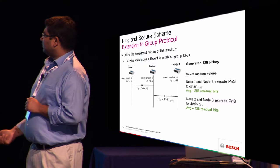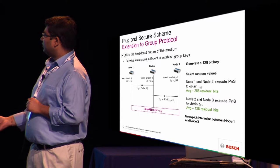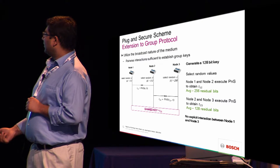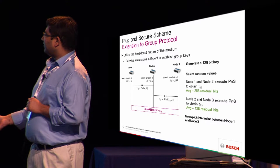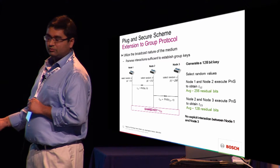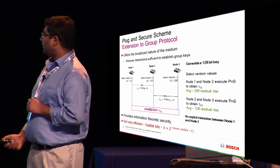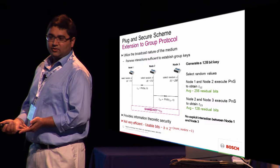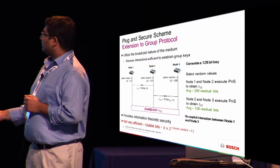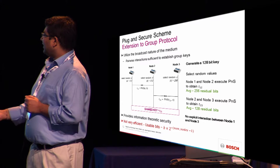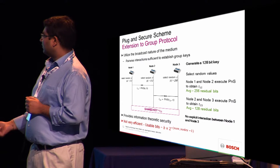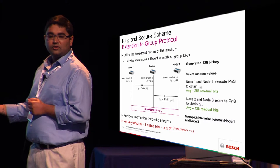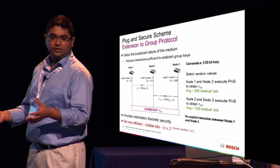Because this is a broadcast medium, node 1 can see whatever node 2 is transmitting, and because of the shared secret established beforehand, node 1 will essentially have the output of this interaction as well — so you get a group key. This is an extension of the basic scheme and provides information-theoretic security. However, we can see the problem here: as you scale and increase the number of nodes, it's not very efficient because you need an exponential number of bits as your group size grows.